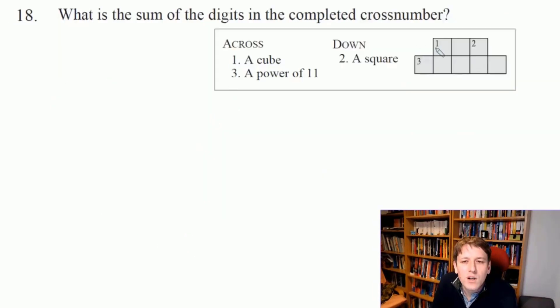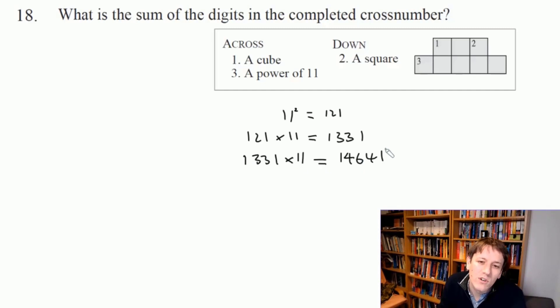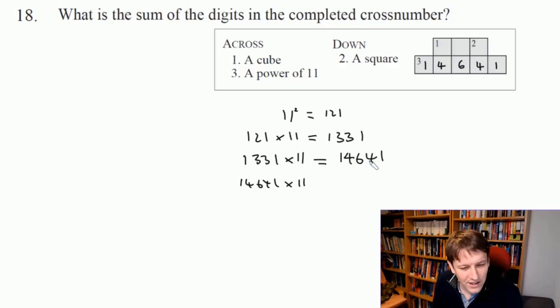Okay, so we're going to fill in this cross number. Along the right here, we've got to have a cube number. Down here, we've got to have a square number. So it's a three-digit cube number, a two-digit square number, and a power of 11 that's five digits. So you might think the power of 11 is the hardest place to start here, but actually in some ways it's the easiest because there's only one five-digit power of 11. 11 squared is 121. And then if I do 121 times 11, I get 1331. If I do 1331 times 11, I get 14641. And if I do 14641 times 11, I get something that's bigger than five digits. So actually, I know this must be 14641.